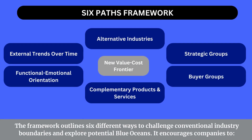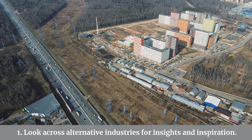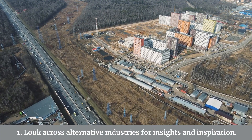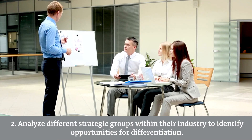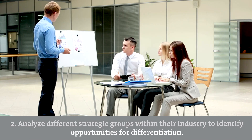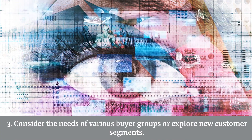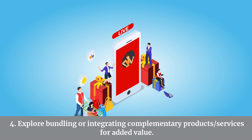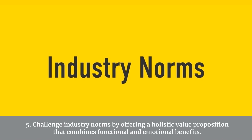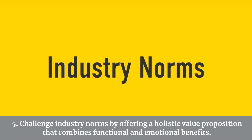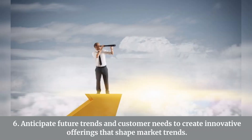The framework outlines six different ways to challenge conventional industry boundaries and explore potential blue oceans. It encourages companies to: one, look across alternative industries for insights and inspiration; two, analyze different strategic groups within their industry to identify opportunities for differentiation; three, consider the needs of various buyer groups or explore new customer segments; four, explore bundling or integrating complementary products and services for added value; five, challenge industry norms by offering a holistic value proposition that combines functional and emotional benefits; six, anticipate future trends and customer needs to create innovative offerings that shape market trends.